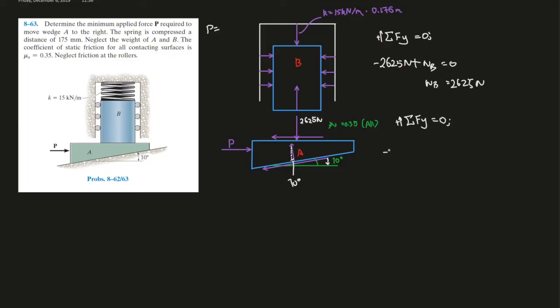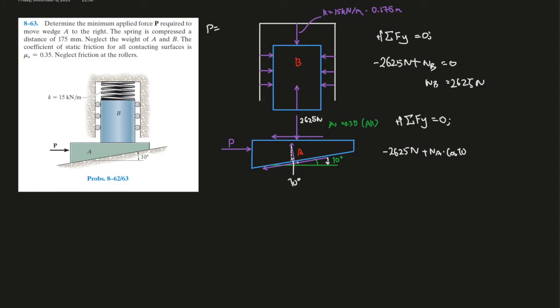So negative 2,625 newtons, plus, let's say here we call it Na. So say Na times cosine of 10. This angle is the same as that angle over there and times cosine, which is this force going that way. That's what we're calculating over here.